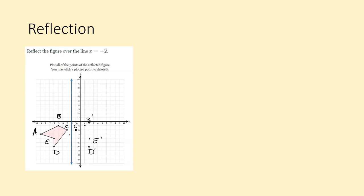And then A is seven points away from the line of symmetry, so A prime goes seven units on the other side — it should go right there. When you connect all of these points, it should look something like this, and we can see that this is a mirror image of the original shape.